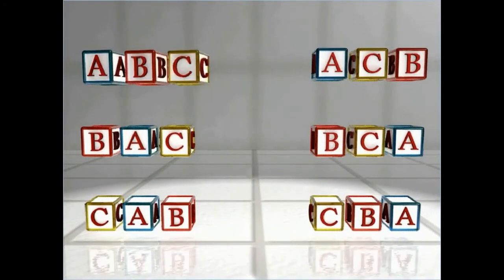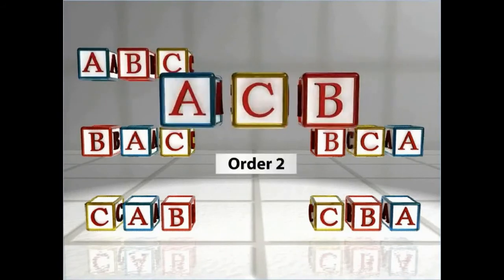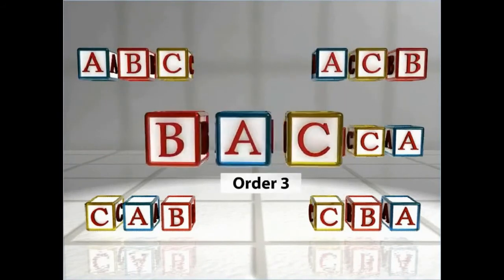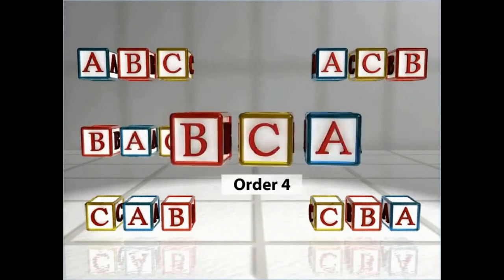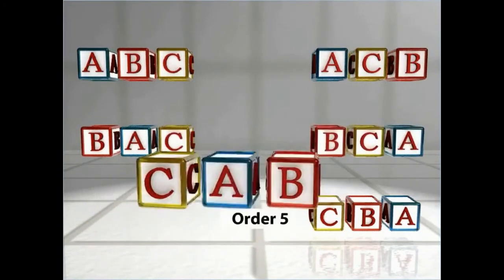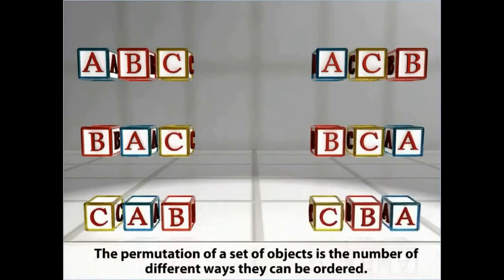Here, the order of arrangement of blocks is important. So, each arrangement is called the permutation of three different blocks taken all at a time. You can define permutation as an arrangement in a definite order of a number of objects taken some or all at a time.